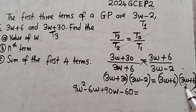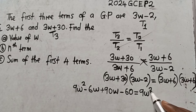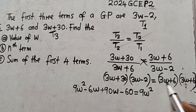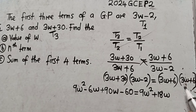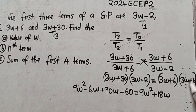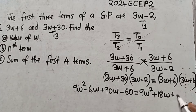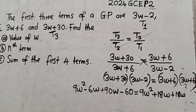Continuing the expansion on the right side: 3w times 3w gives 9w squared, and 3w times 6 gives plus 18w. Then 6 times 3w gives plus 18w, and 6 times 6 gives plus 36. So the right side has 9w squared plus 36w plus 36.